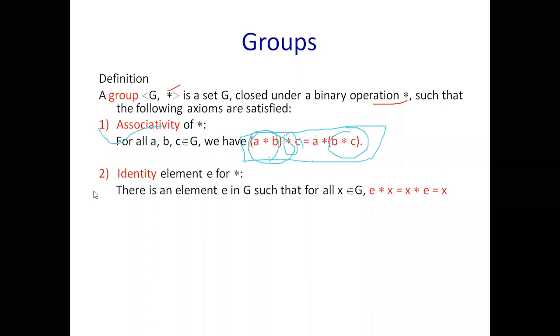Next property: Identity element e for *. There is an element e in G such that for all x belongs to G, we have e * x is equal to x * e is equal to x.